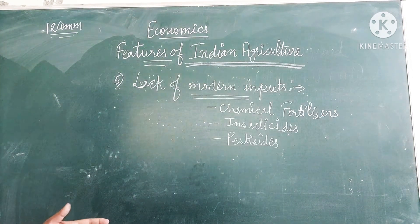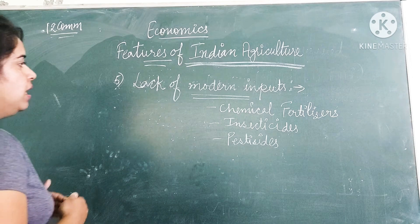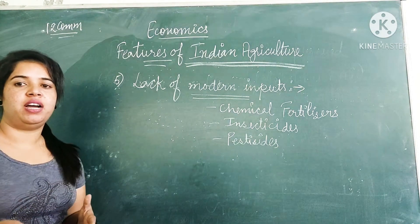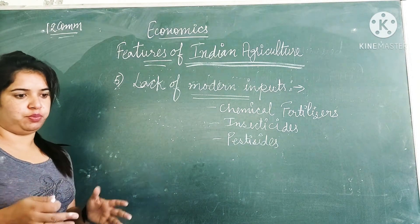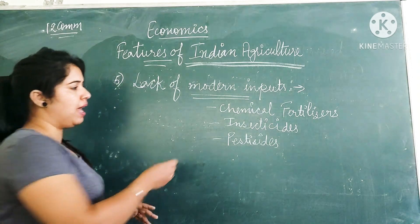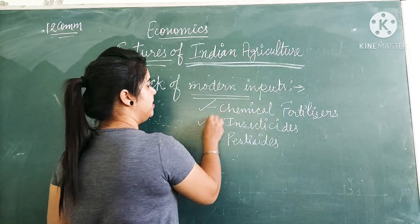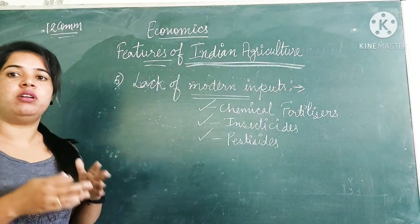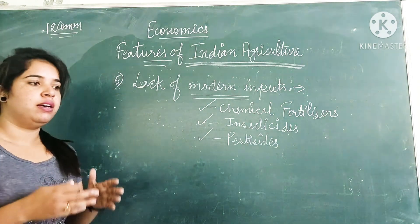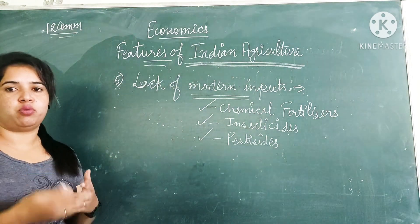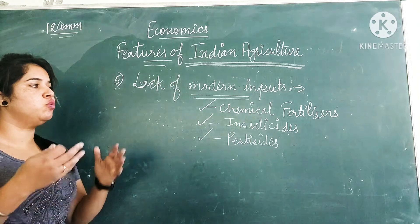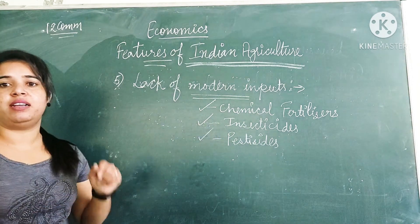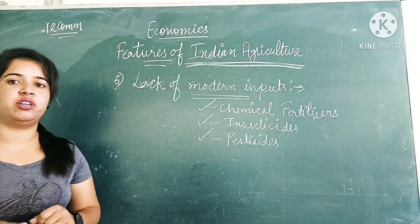The next feature is the lack of modern inputs. Farmers of India do not have access to modern inputs like chemical fertilizers, insecticides, or pesticides — they are beyond the reach of farmers. This is the reason that Indian agriculture remains backward.